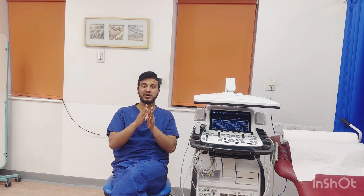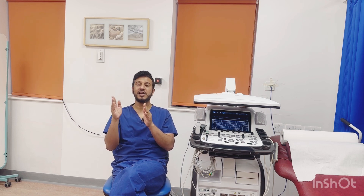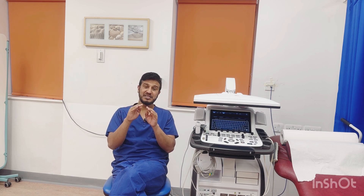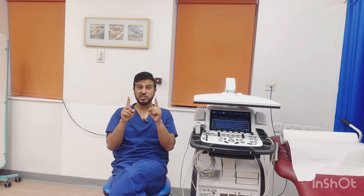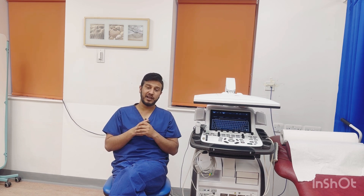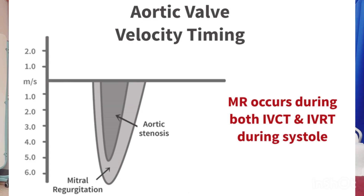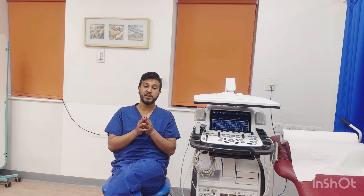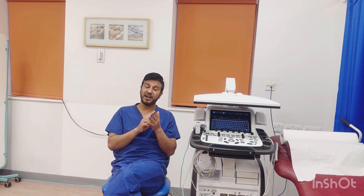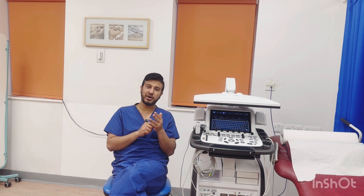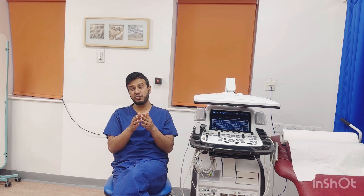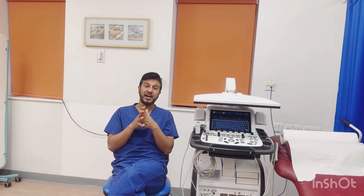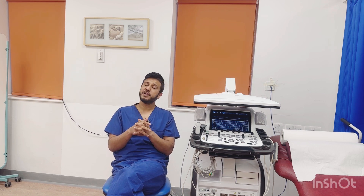The MR signal is longer in duration — it covers the IVCT (isovolumic contraction time), the ejection time, and also the IVRT (isovolumic relaxation time). So MR will be larger in duration and also higher in signal. As shown on screen, the AS signal is smaller in duration while the MR signal is longer. If your signal starts just after the QRS, it is an MR signal; if it starts after the QRS and closes before the IVRT, it is an AS signal.